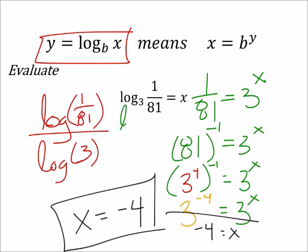Again, if it's easier for you guys to find the natural log, then you can find the natural log of 1 over 81. Oh, that's 18. Let's make that 81. Over the natural log of 3. And that also would give you negative 4.